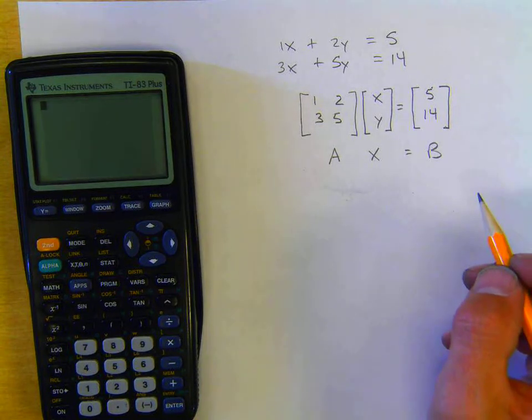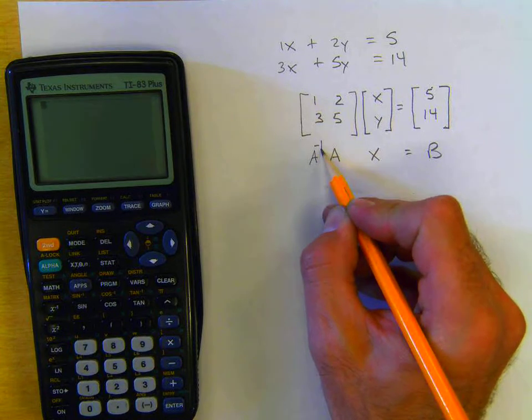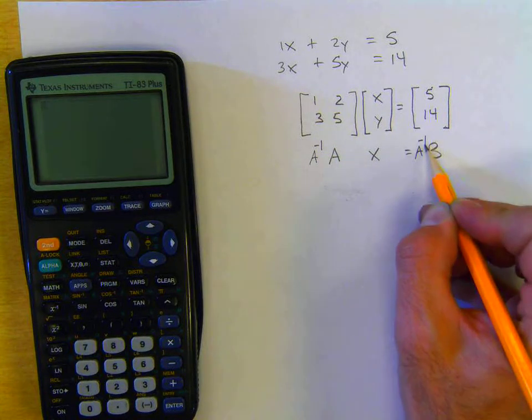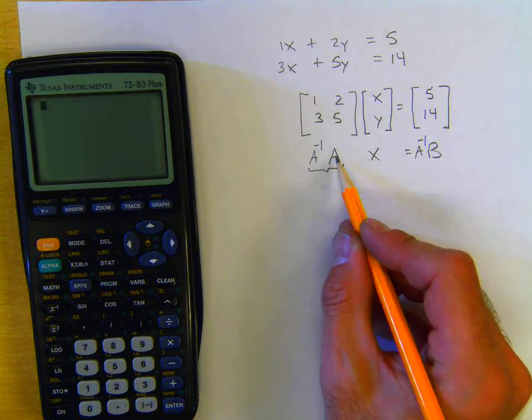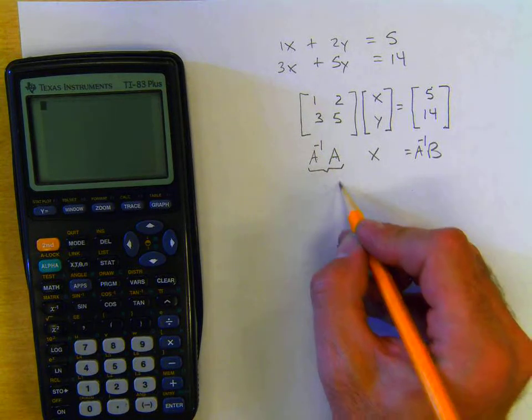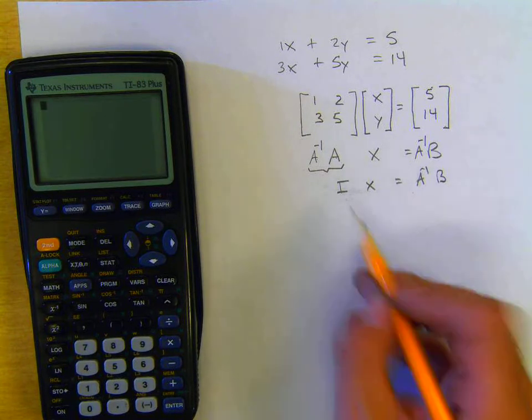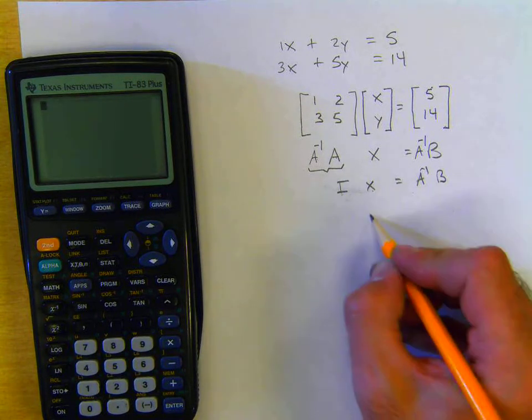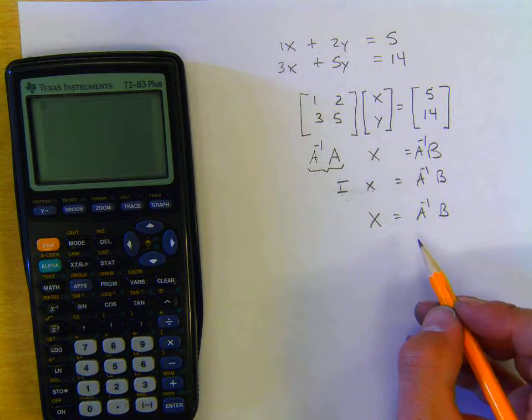Using matrix math we can solve this by multiplying by the inverse matrix on both sides. You will recall that the inverse matrix times the matrix is the identity matrix, and the identity matrix times any matrix is that matrix. So let's do the following.